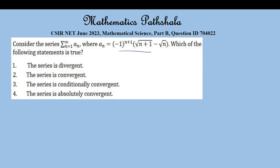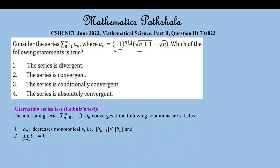We can clearly see that the series is an alternating series. By the alternating series test, the series summation over n equal to 0 to infinity of (-1)^n * b_n converges if the following conditions are satisfied: number one, b_n decreases monotonically, that is |b_{n+1}| ≤ |b_n|; and number two, the limit of b_n becomes zero.